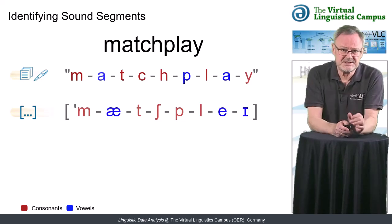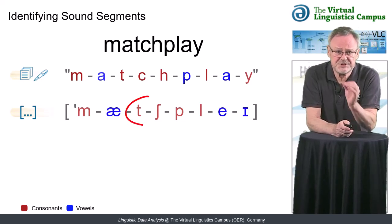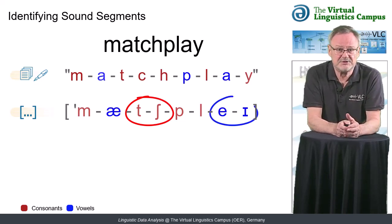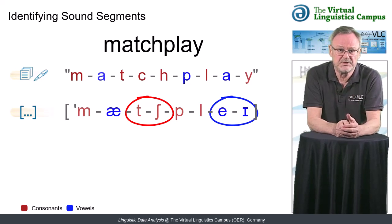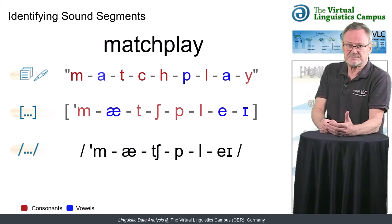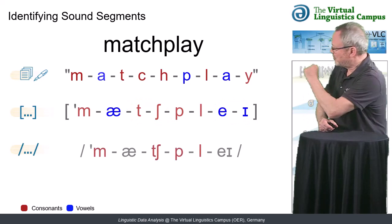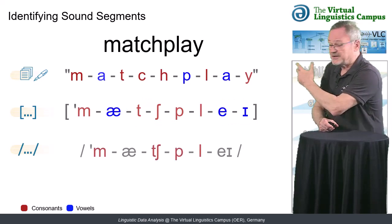But since in RP, CH is an affricate and A a diphthong and both constitute single phonemes, we have only six elements, that is, four consonants and two vowels.